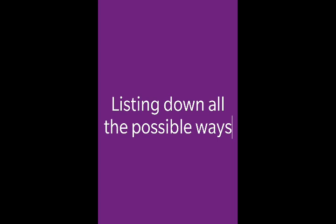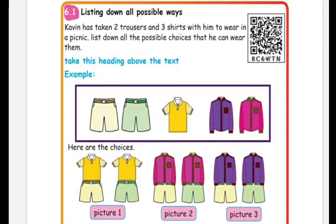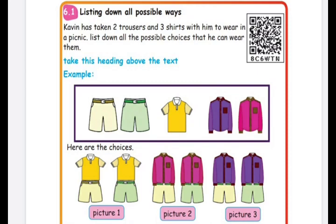Covin has taken two trousers and three shirts with him to wear on a picnic. He has two shorts and three shirts and is confused about which one to wear. List out all possible choices that he can wear. Let us help him. There are three shirts and two shorts.